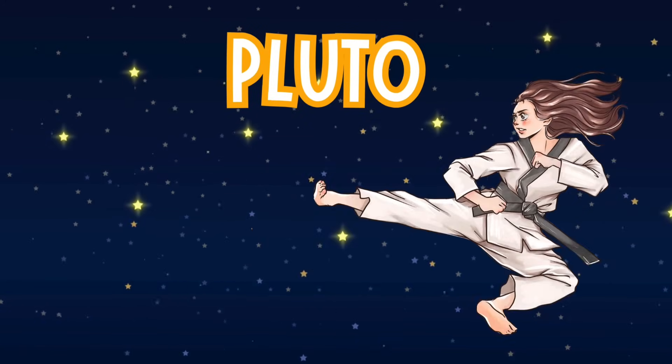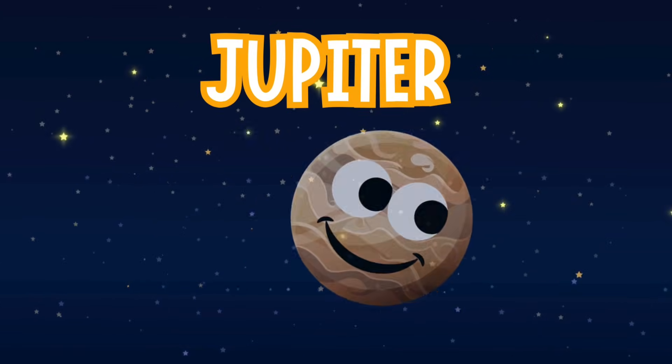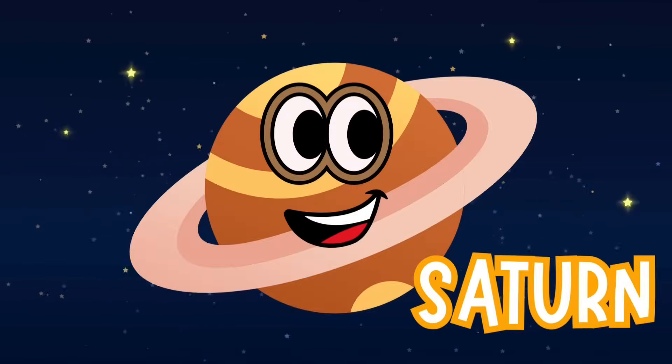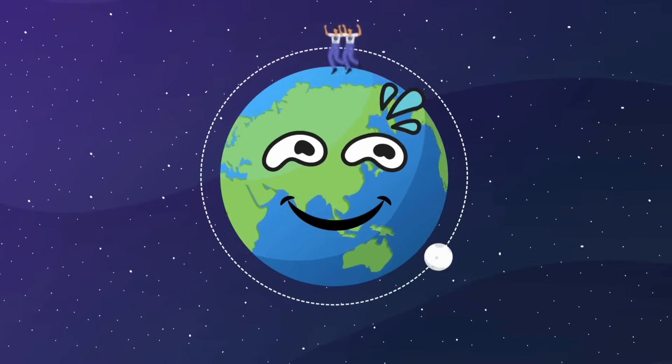Pluto gets sympathy for being kicked out. Jupiter gets all the love for being the big guy. Mars is the fan favorite. Saturn has the rings and Earth. Well, you're standing on it.